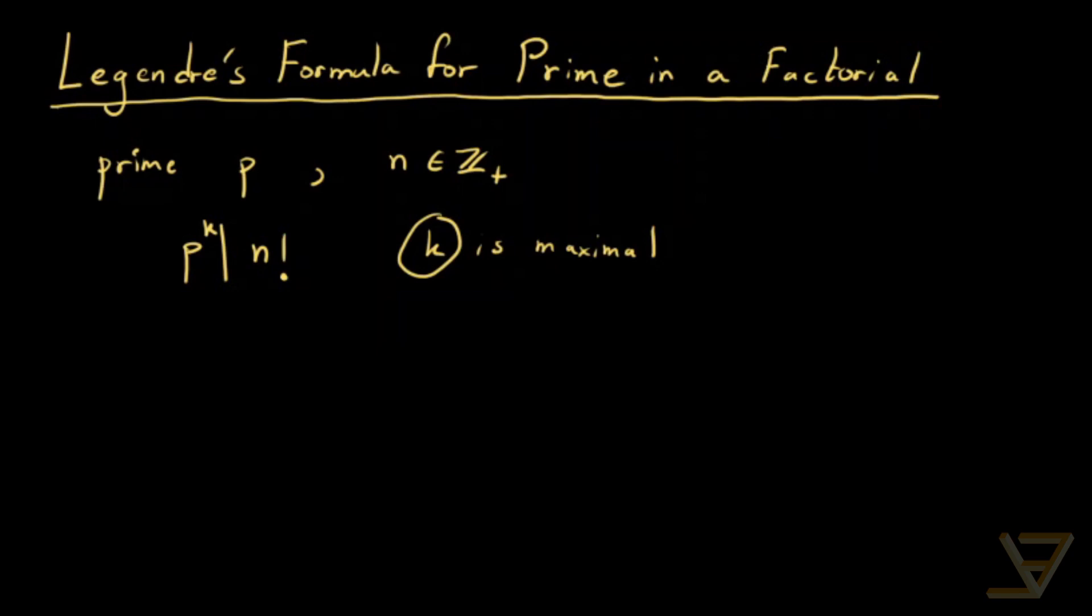So we're going to denote the answer by k equals to nu of p of n factorial. This is called p-adic order, yeah, the p-adic order notation.